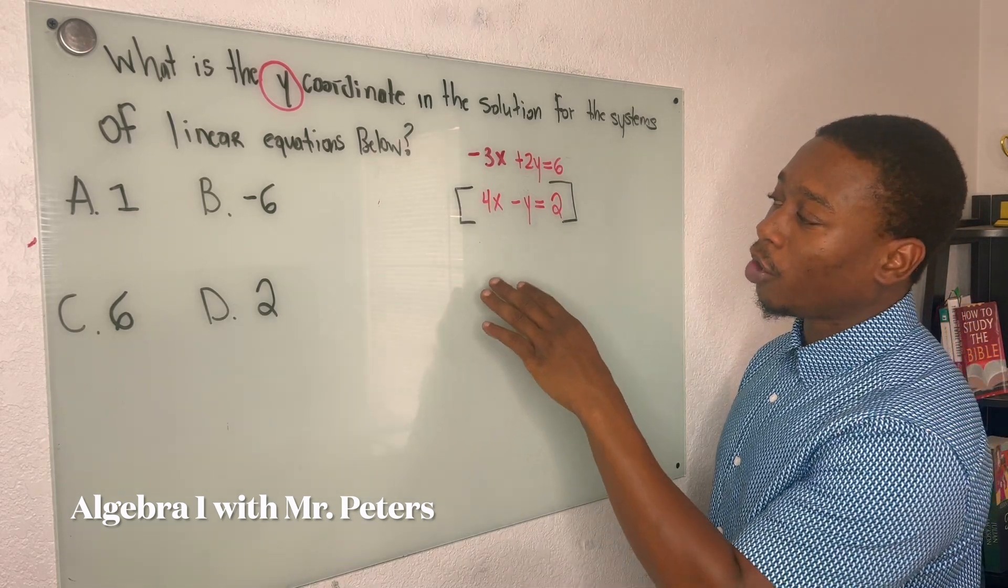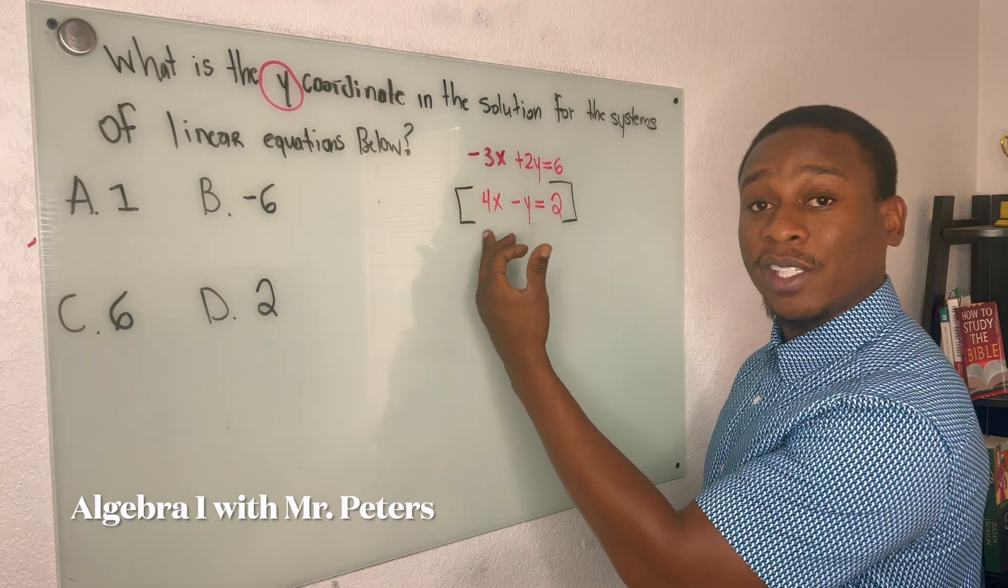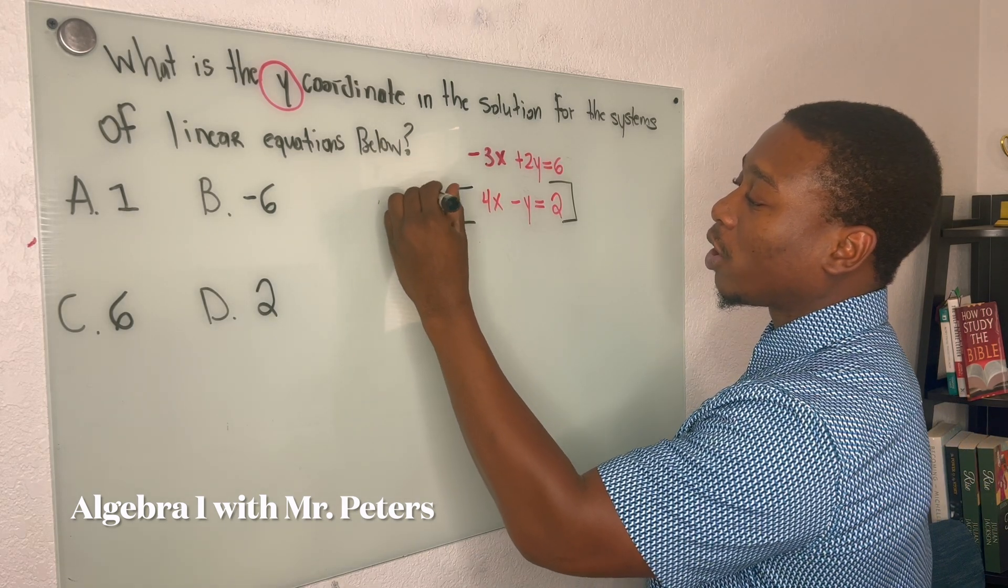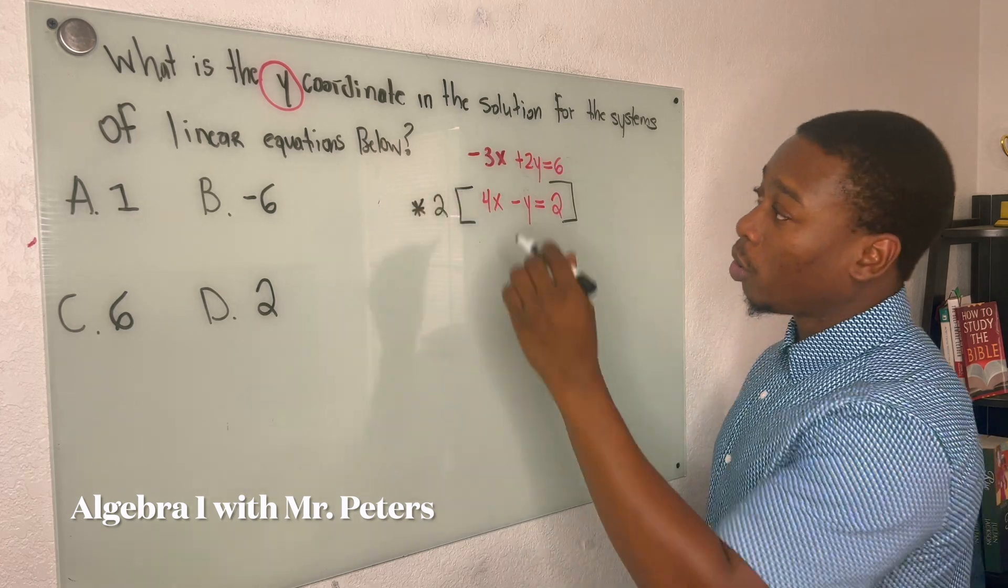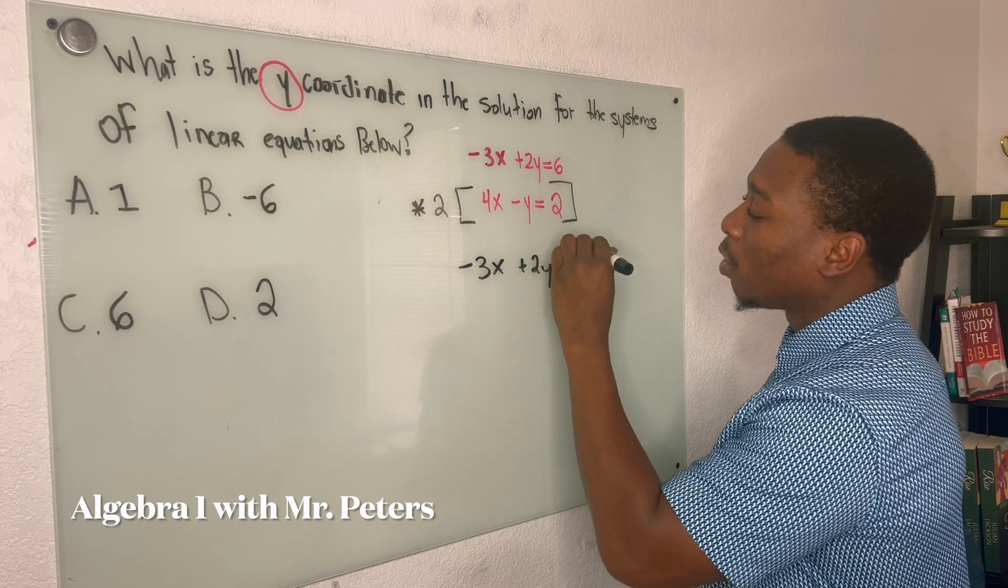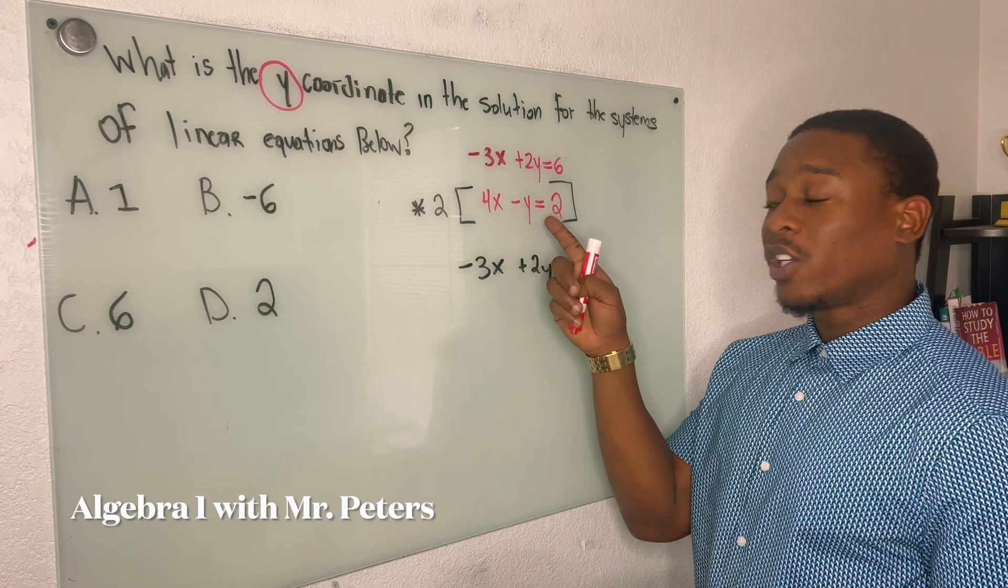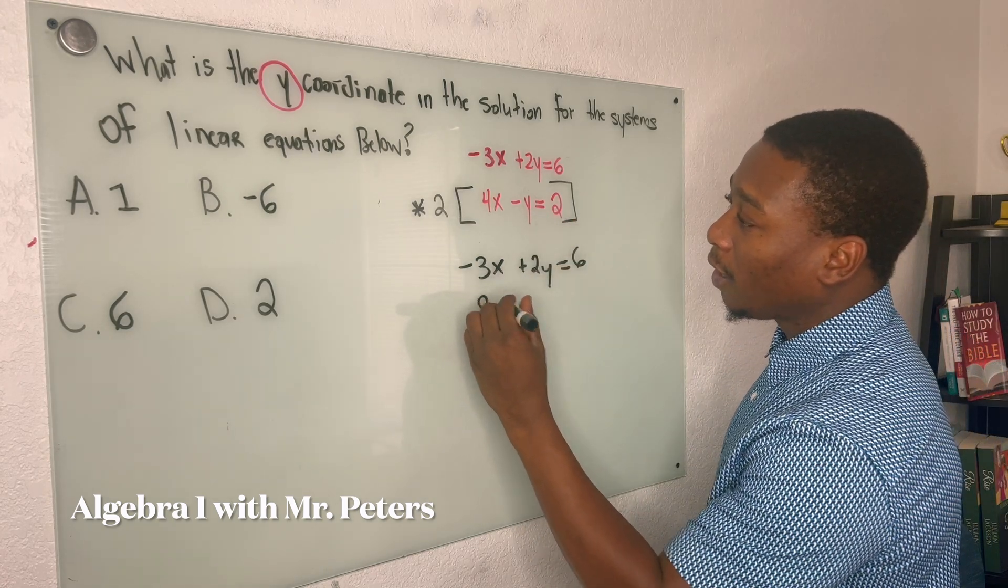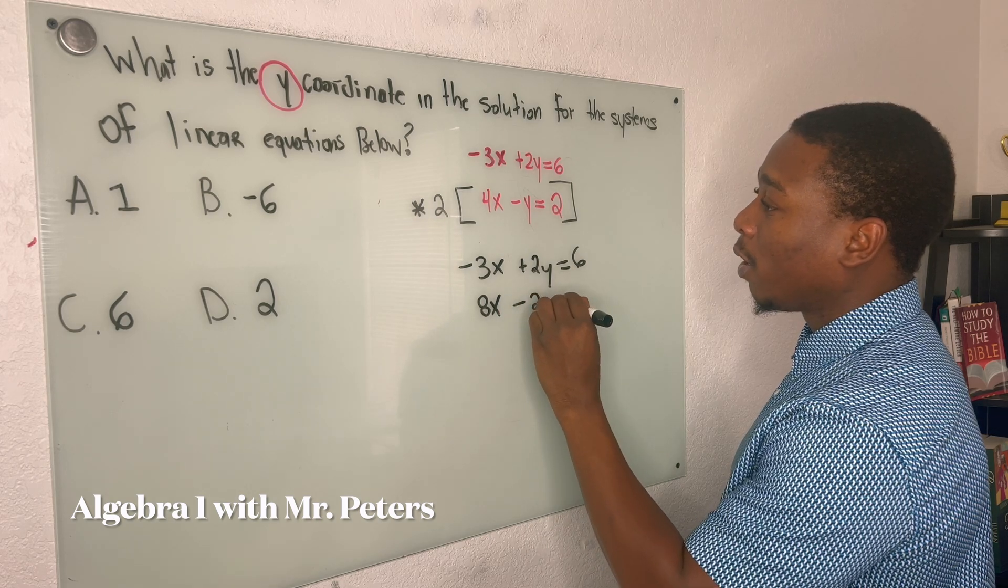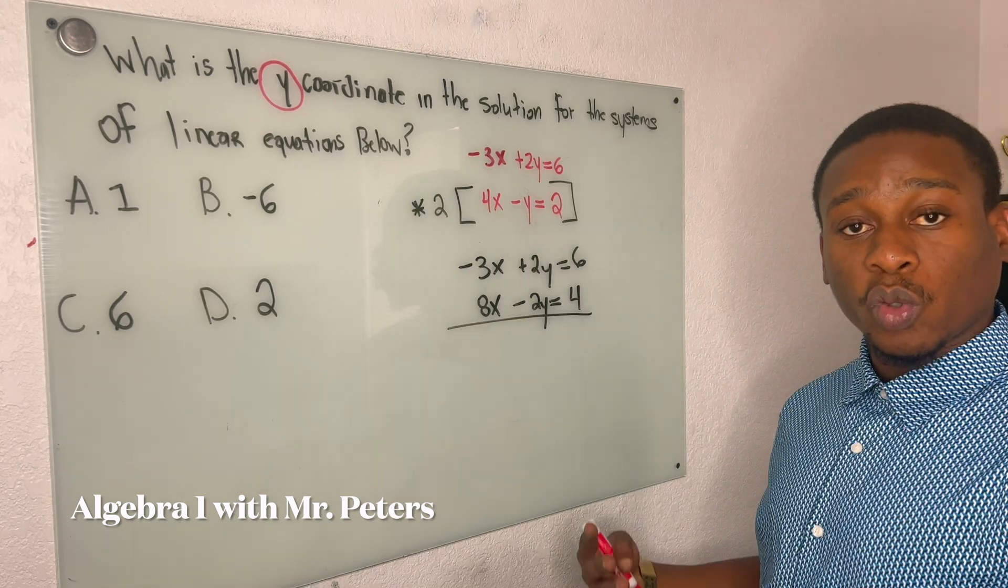And before we go there, just make sure that you reread the question properly. Because a lot of us want to start off with the x variable, but they didn't ask us for it. So we're going to multiply this equation by positive 2. This first one is going to stay the same. So let's just rewrite it. So once we multiply all three terms by 2, not just y, all three, we're going to get 8x minus 2y is equal to 4.